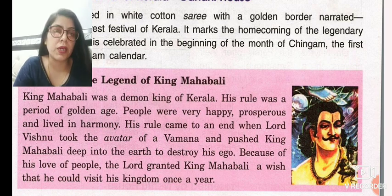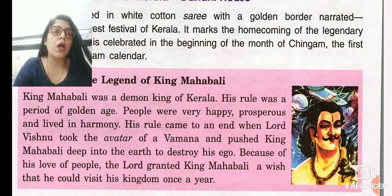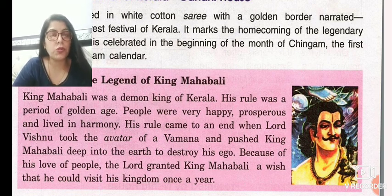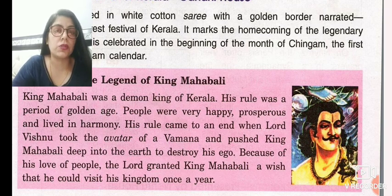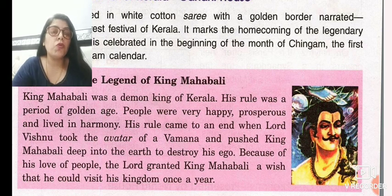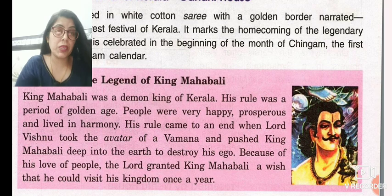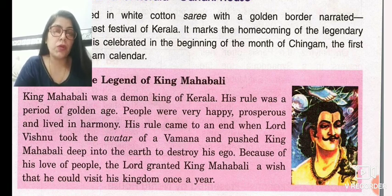Vaman then took a gigantic form, covered the entire earth with one step and the entire sky with another. Then he asked Mahabali where to place his third step. So Mahabali said you can place your third step on my head. After that, Lord Vishnu placed his third step on Mahabali's head and pushed him deep into the earth — to destroy his ego and break his arrogance.